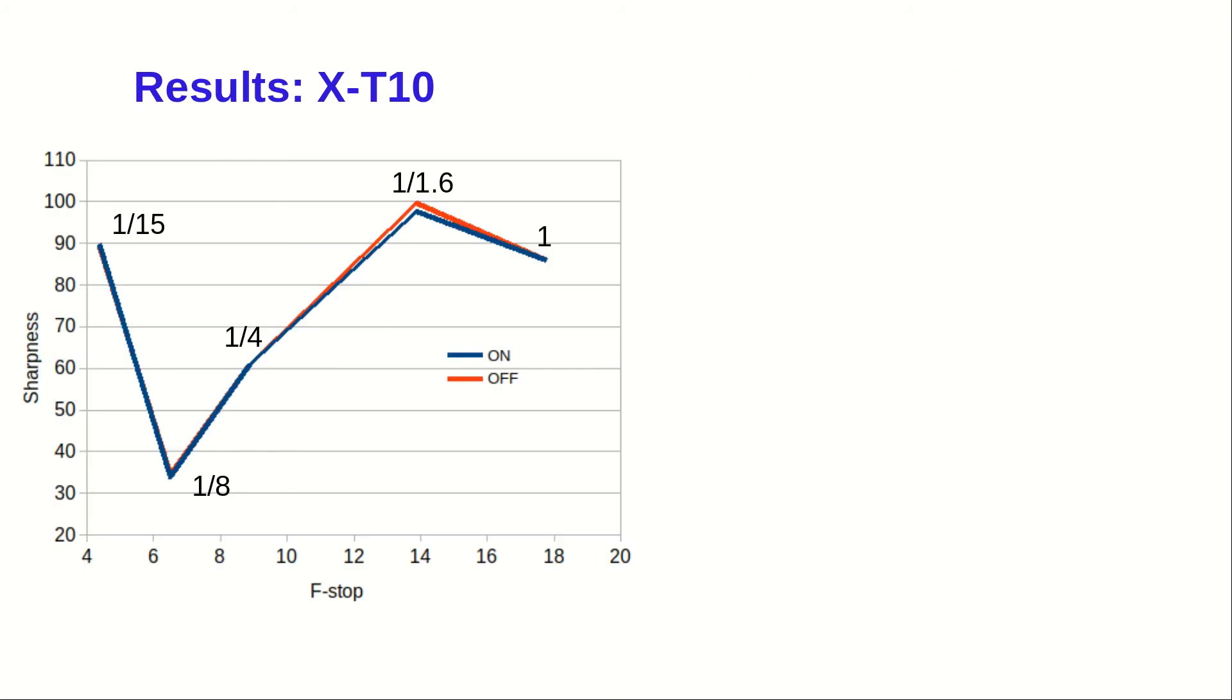Qualitatively, the results are very much the same, which is great. Again, we are seeing the fastest or slowest shutter speeds not differing in sharpness, with or without the IS.